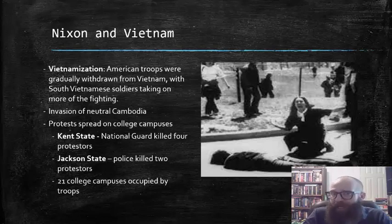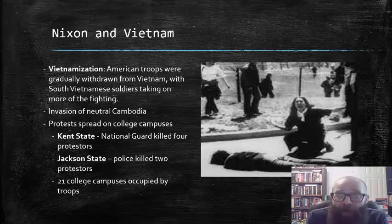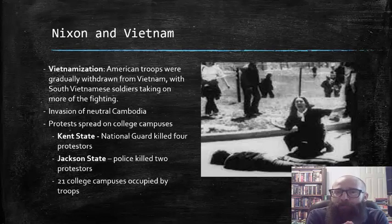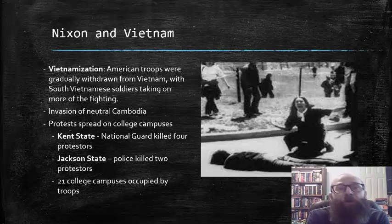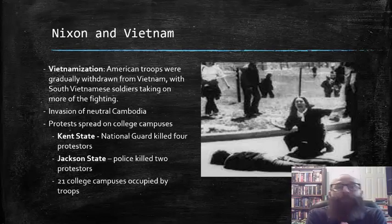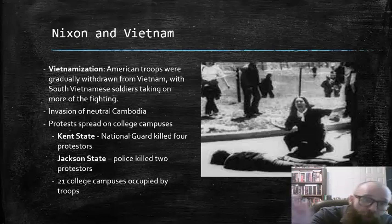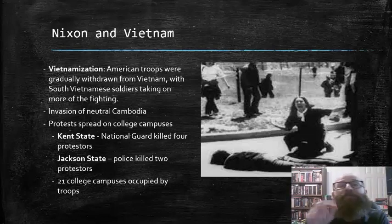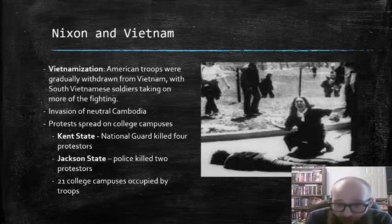This was somewhat countered, however, by the U.S. invasion of the neutral country of Cambodia. Cambodia was right on the border of South Vietnam, and it had long been known that the North Vietnamese forces had been using Cambodia as a way to funnel troops and supplies from North Vietnam down into South Vietnam.